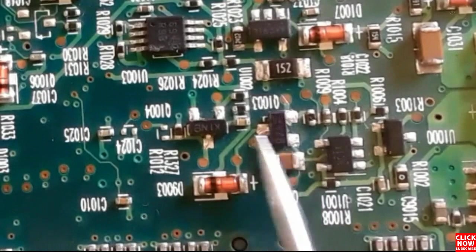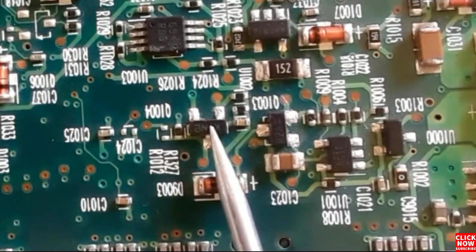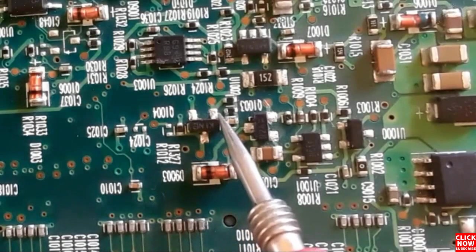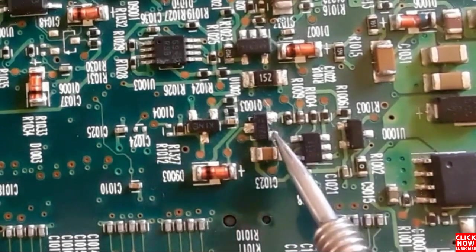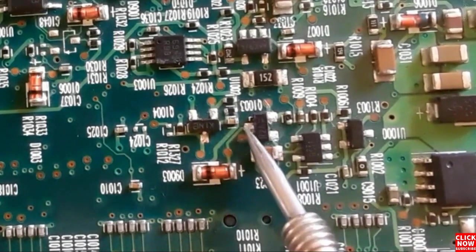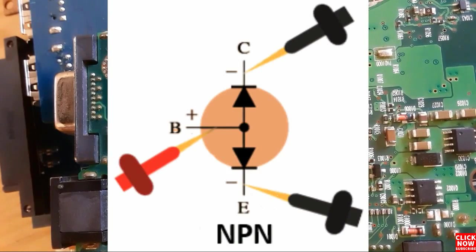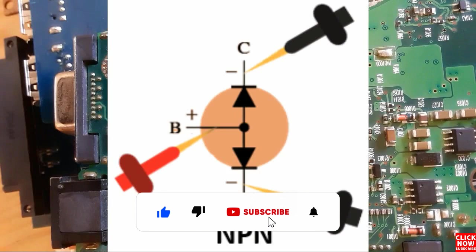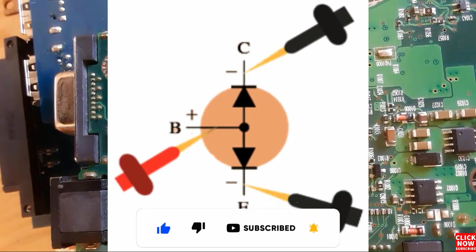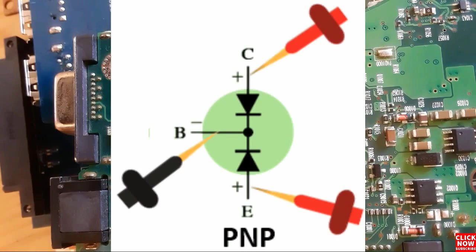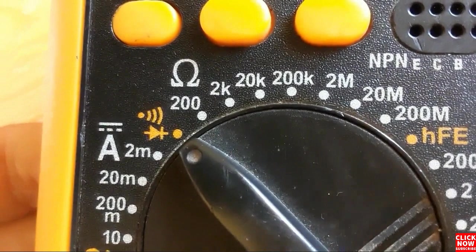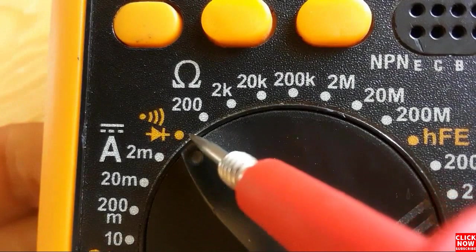We will test NPN transistors and PNP transistors. As you can see in this motherboard, we have many transistors. The reference for a transistor is Q. For an NPN transistor, you will get a reading when you place the red probe of the multimeter in the base and the black probe once in the collector and once in the emitter. For a PNP transistor, you will get a reading when you place the black probe in the base and the red probe once in the collector and once in the emitter.